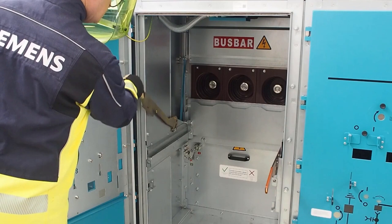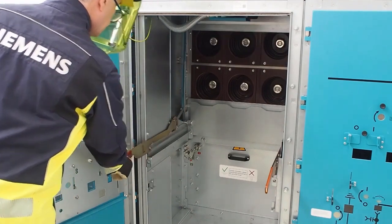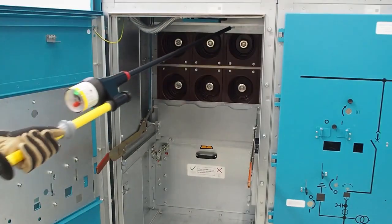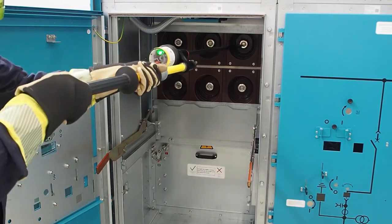Then, open the upper shutter of the bus bar. Finally, check that there is no voltage across the upper contacts of the bus bar.